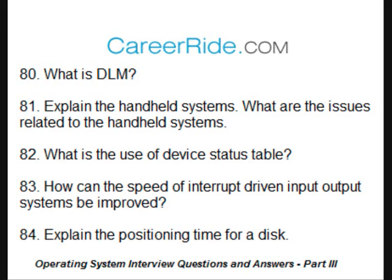How can the speed of interrupt-driven input/output systems be improved? Direct memory access (DMA) is used to enhance the speed of I/O systems. Buffers, counters, and pointers are set for the devices. The device controller transfers the block of data directly from its own buffer storage to memory, without passing data through the CPU. Only one interrupt is generated per block rather than one interrupt per byte, which enhances the speed.